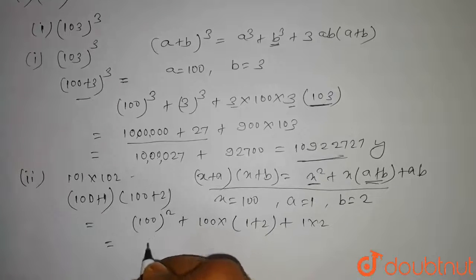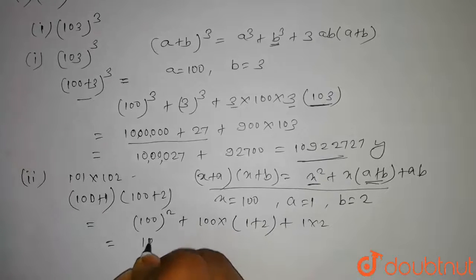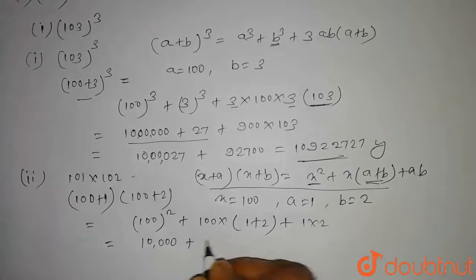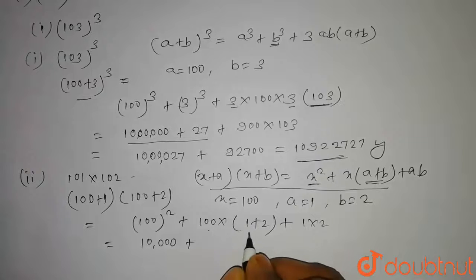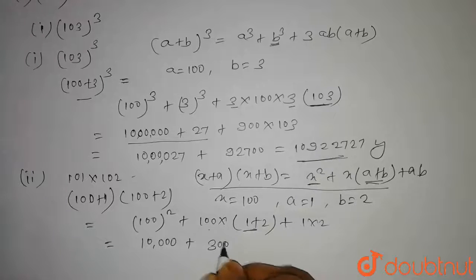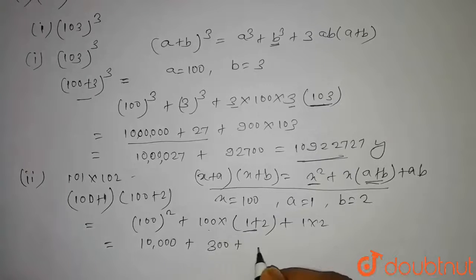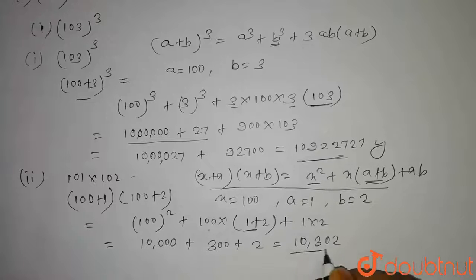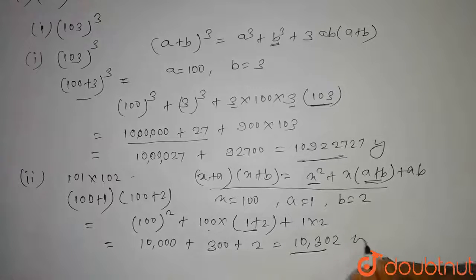So 100² = 10,000, plus 100 × 3 = 300, plus 2. So we get 10,302. This is our answer.